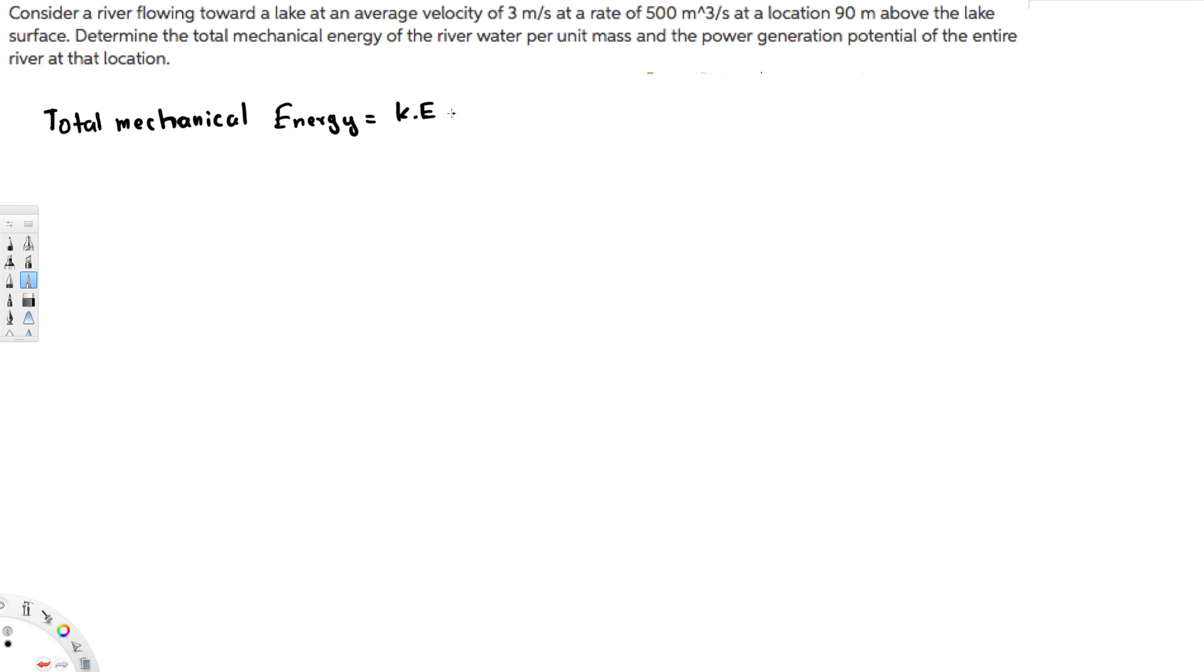This is going to be equal to kinetic energy plus potential energy. We know the kinetic energy is going to be half mv square and potential energy is going to be mgh. Here they are asking this one in terms of per unit mass so we have to divide everything by mass. So if it's E, the thing we are going to find is E over m.